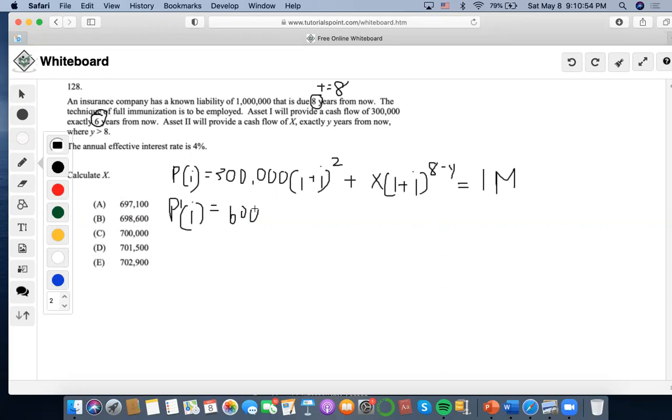So if I solve the derivatives here, 600k, one plus i, plus e minus y, x, then one plus i, seven minus y, equals one million.